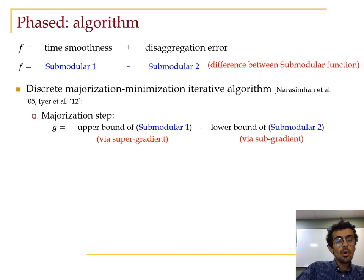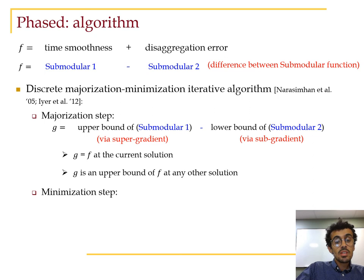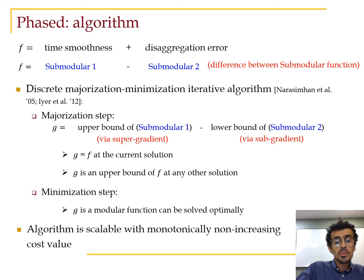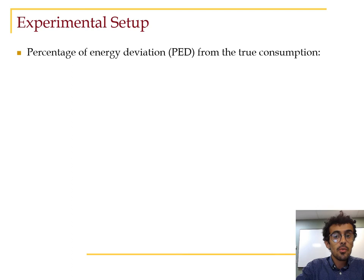In the majorization step, we derive an upper bound of the time smoothness term and a lower bound of the disaggregation error term. This results in a global upper bound that is equal to the original function f at the current solution and an upper bound of f at any other solution. In the second step, we minimize a modular function, which plays the same role as a linear function in continuous functions, and can be solved optimally. The overall algorithm is scalable and has guaranteed convergence.